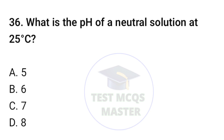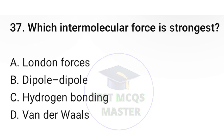Question number thirty-six: what is the pH of a neutral solution at 25 degrees Celsius? The correct option is C, 7. Question number thirty-seven: which intermolecular force is strongest? The correct option is C, hydrogen bonding.